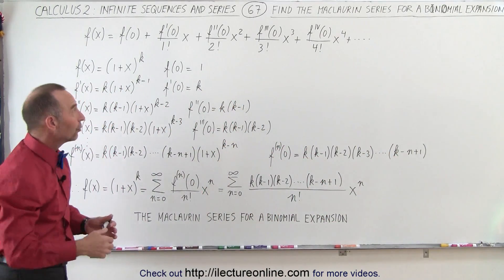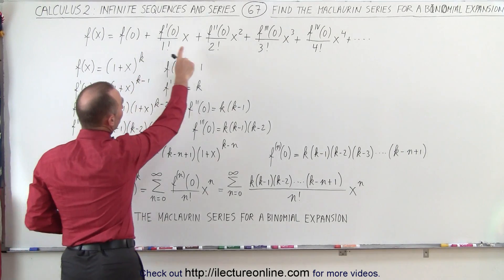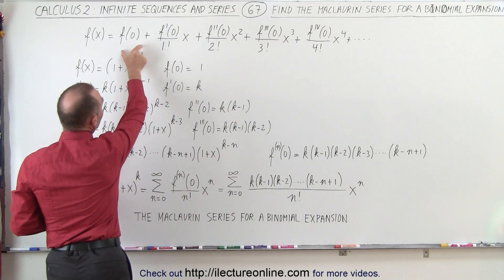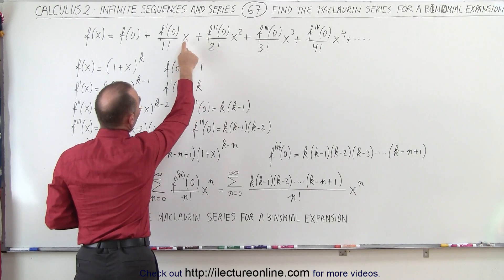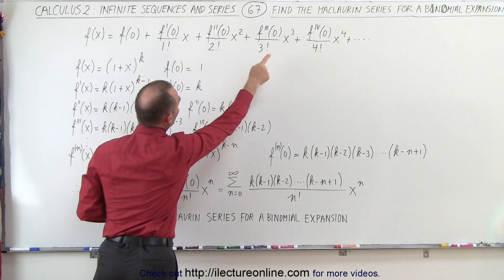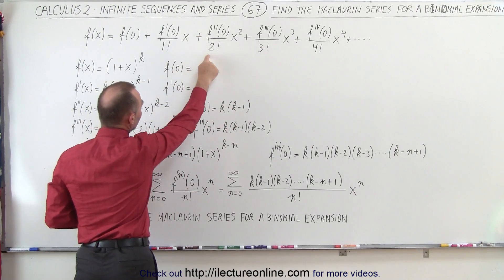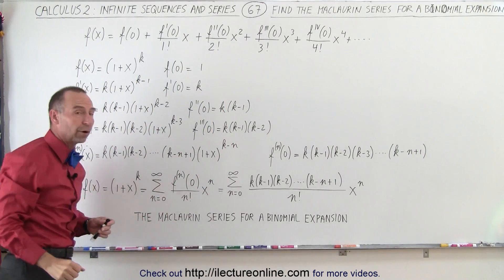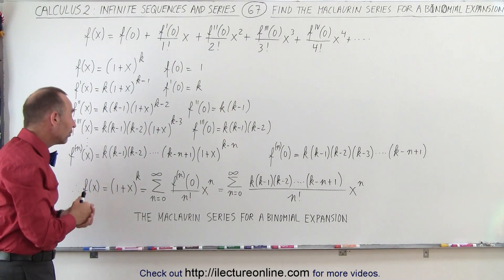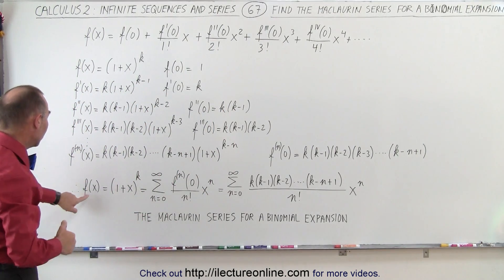So now when we add all those together, because now we're going to add those terms together, that in each case, each consecutive term, we're going to multiply times x by x squared by x cubed, and divide by 1 factorial, 2 factorial, 3 factorial, and so forth. So the Maclaurin series for binomial expansion then looks as follows.